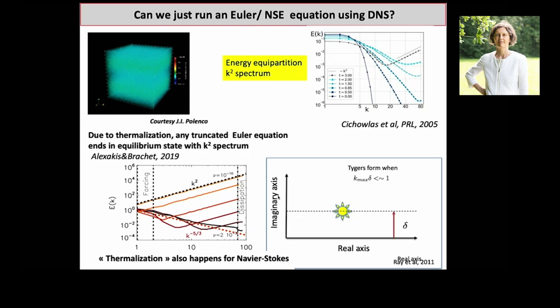The explanation for this thermalization was given by the group of Frisch and Sergei — if you have questions, Sergei is here and can explain it much better. What could be happening is that thermalization comes from interaction with a complex singularity that sits in the complex plane and would like to move toward the real axis. It stays at distance δ from the wall, and as soon as your resolution is of order δ, thermalization happens. To avoid this, you need K_max → ∞ so the singularity can reach the real axis and develop into a real singularity.